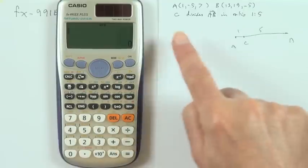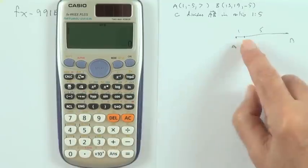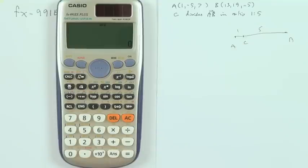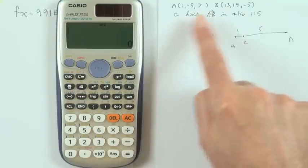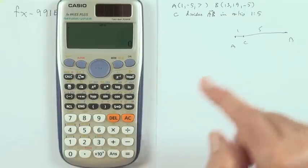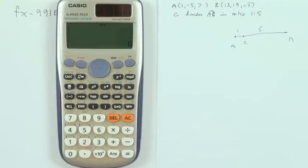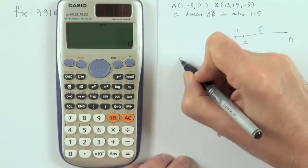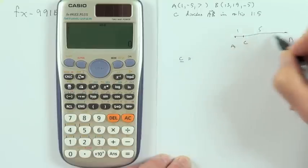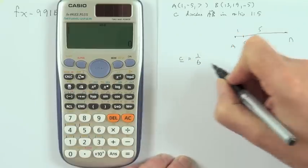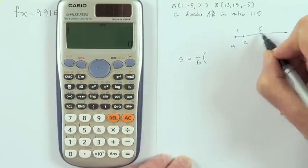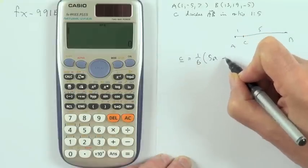Now unfortunately there isn't any quick way of getting that division there. I'll just have to enter that manually, just by using the formula that you know, or by working out the displacement AB and taking a fraction of it. But I'll just use the formula. The formula would be, to get the position vector of C, if there's six parts altogether, it's going to be 1/6 of 5 times A plus B.